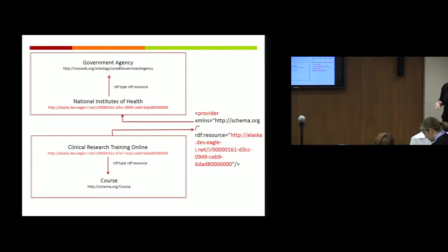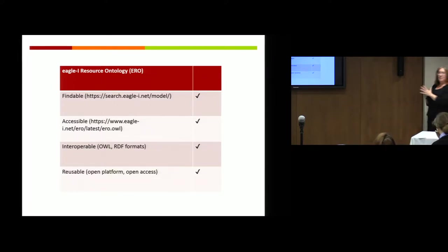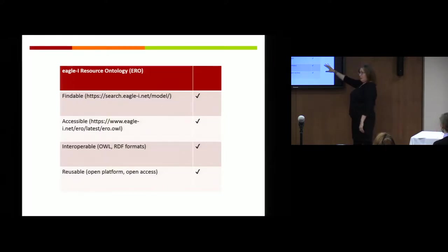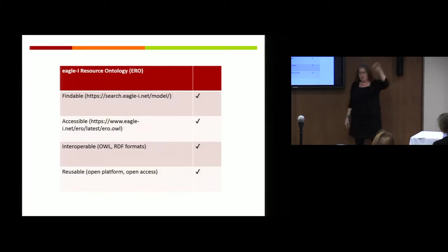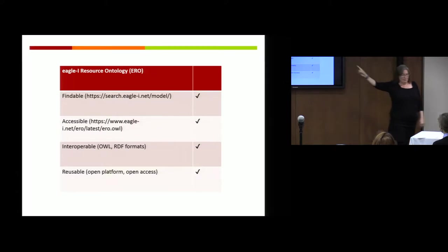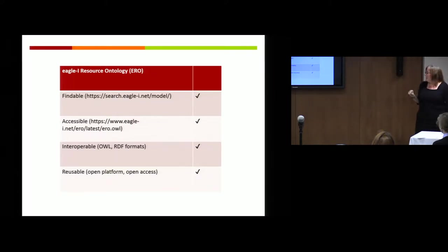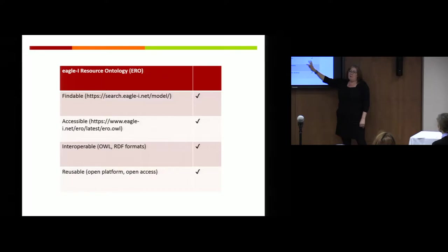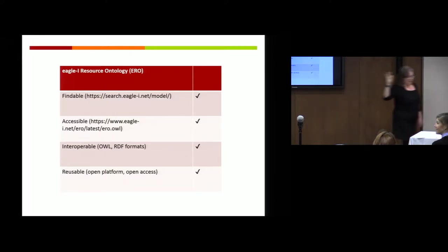Now we're getting to the fun part. I'm going to ask you what letter I actually assigned to this concept: I evaluated our ontology, the ERO, according to the FAIR principles. According to me, we do indeed have an ontology that is findable, accessible, interoperable, and reusable. So if you look at your papers, what letter would this go under? If I have a FAIR ontology — yes, that's right, it is I. Who said I? You get an ice cream cone for I.